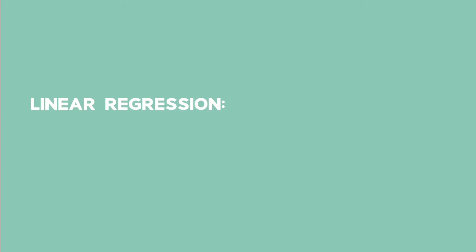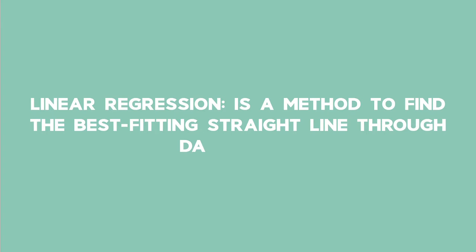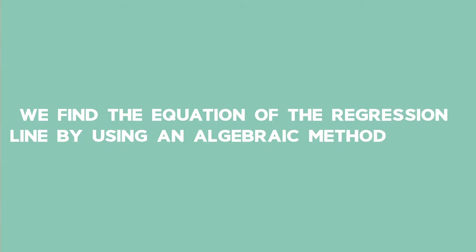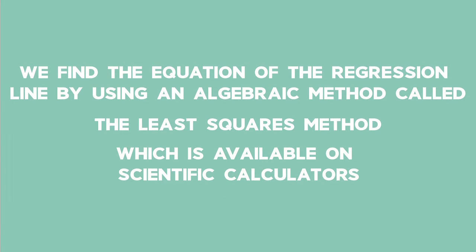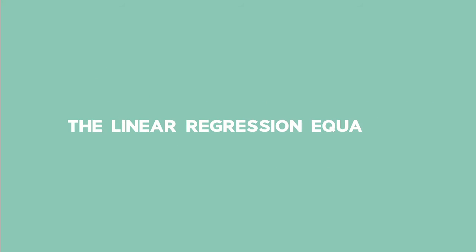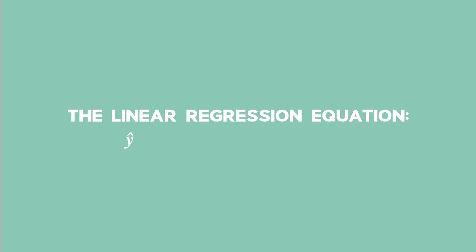Linear regression is a method to find the best fitting straight line through data points. We find the equation of the regression line by using an algebraic method called the least squares method, which is available on scientific calculators. The linear regression equation is written as y-hat equals a plus bx or y equals capital A plus capital Bx.